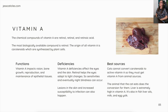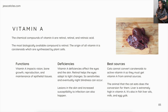Vitamin A. The chemical compounds of vitamin A are retinol, retinal, and retinoic acid. The most biologically available compound is retinol. The origin of all vitamin A is carotenoids, which are synthesized by plant cells.